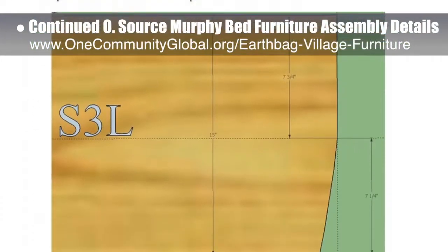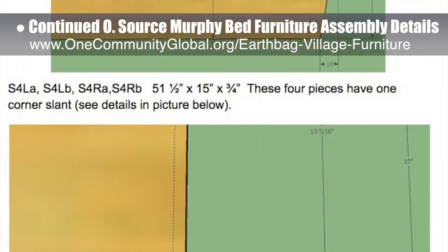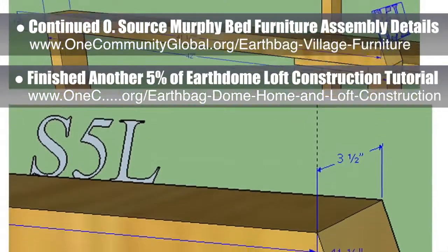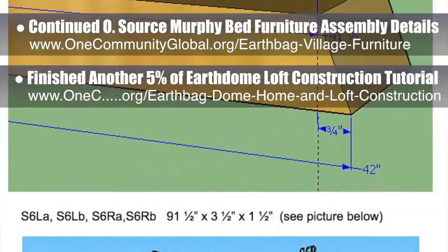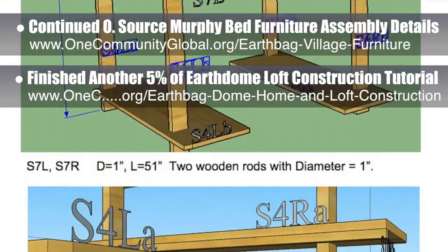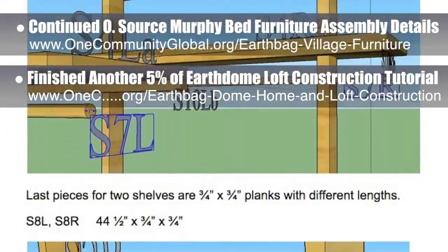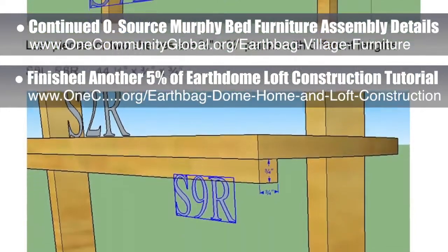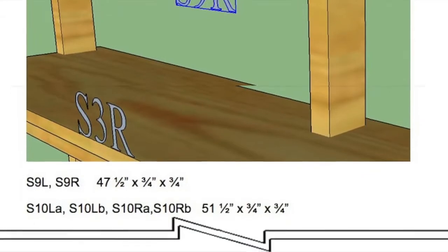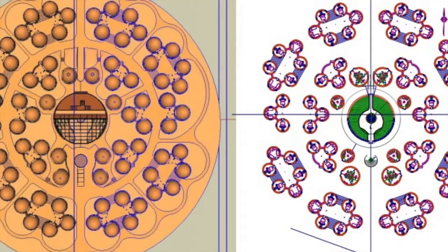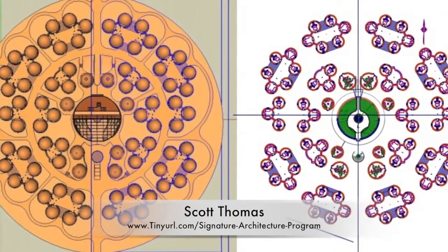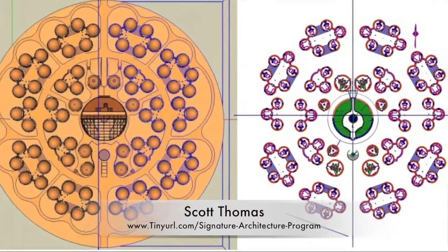We estimate we are now 67% complete with this behind the scenes work. Also behind the scenes, we finished another 5% of the EarthDome Loft construction tutorial specifics. This work included laying out details for the deck install, looking at a possible need to change spacing of joists, sorting out screw sizes, and creating what was needed for an engineer to run loft structural calculations. We're now 60% complete with that work. Scott Thomas and the Shadow Ridge Signature Architecture Program team also finished their part putting the complete EarthBag Village components together in AutoCAD — this is the 2D layout of the complete village created from our 3D SketchUp files.